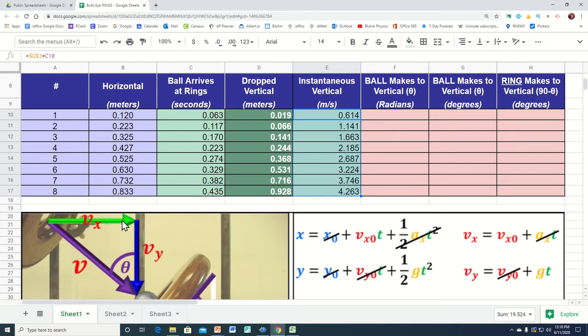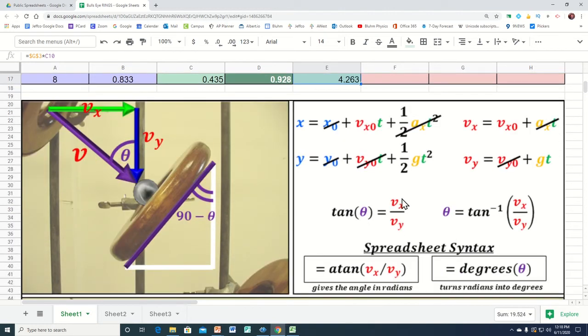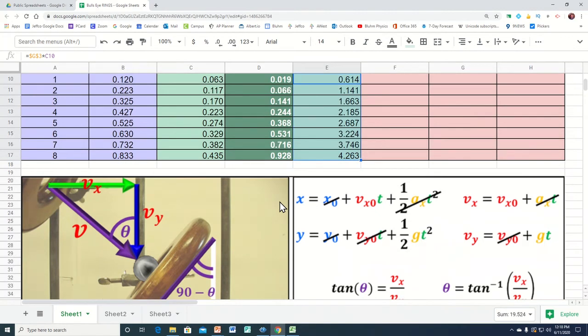So if I know the horizontal component and the vertical component, I can say the tangent of that angle is equal to opposite over adjacent. I want to find out what the angle is, so I have to take the inverse tangent of both sides, the inverse tangent of opposite over adjacent. And the way we type that into a spreadsheet is atan of opposite over adjacent. It stands for the arc tangent and inverse tangent. Same thing.